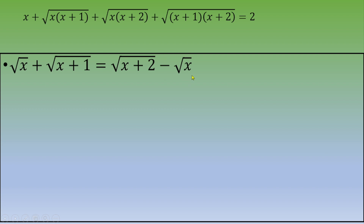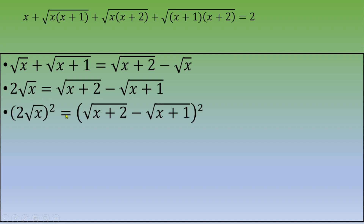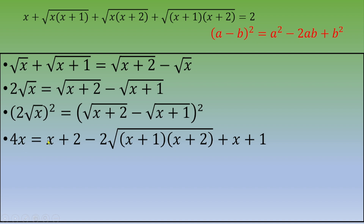Rearranging by moving √(x+1) to the other side: 2√x = √(x+2) − √(x+1). We then square both sides. On the right we use the identity (a−b)² = a²−2ab+b², giving 4x = (x+2) − 2√((x+1)(x+2)) + (x+1).